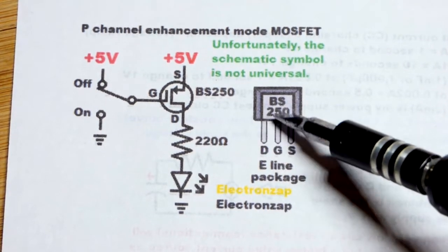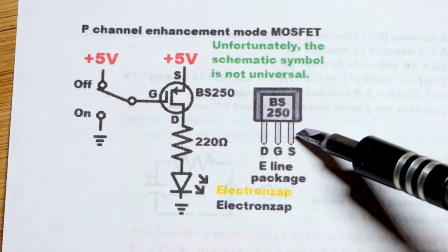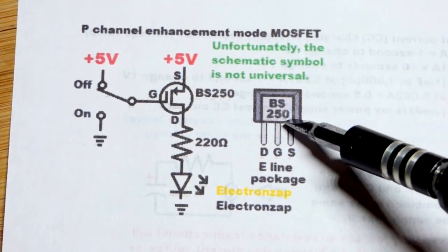Part number's on the front. The drain is to the left, gate is in the middle, and source is to the right. Otherwise it plugs into the board just like a TO92 package.